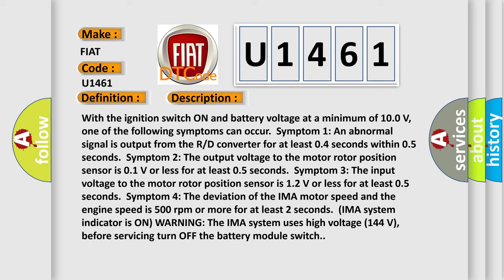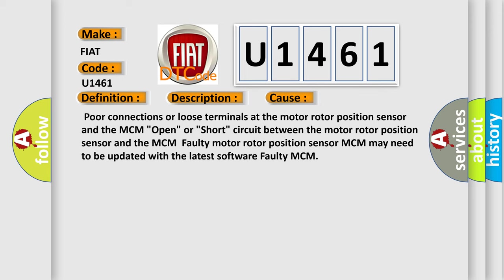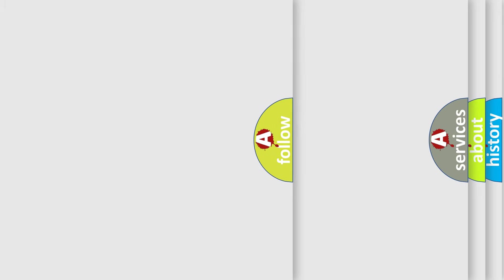The IMA system uses high voltage — 144 volts — so before servicing, turn off the battery module switch. This diagnostic error occurs most often in these cases: poor connections or loose terminals at the motor rotor position sensor and the MCM; open or short circuit between the motor rotor position sensor and the MCM; faulty motor rotor position sensor; MCM may need to be updated with the latest software; or a faulty MCM.